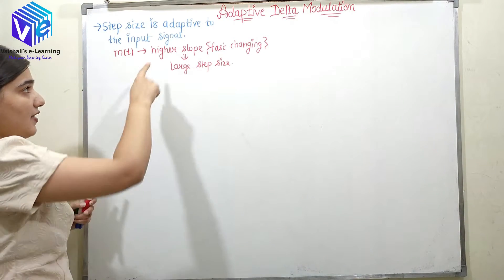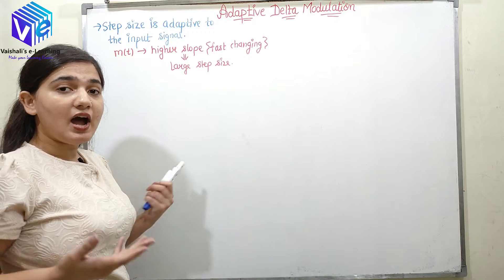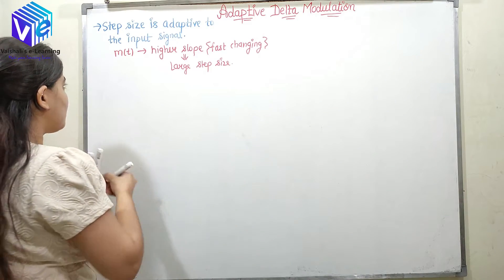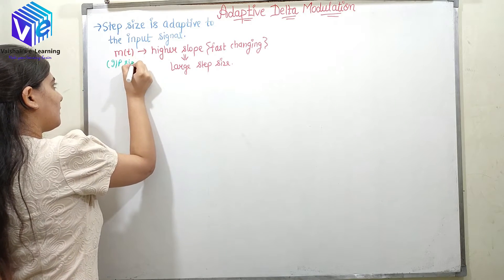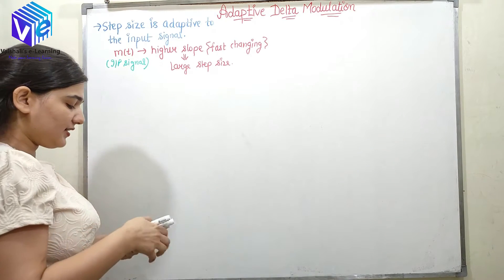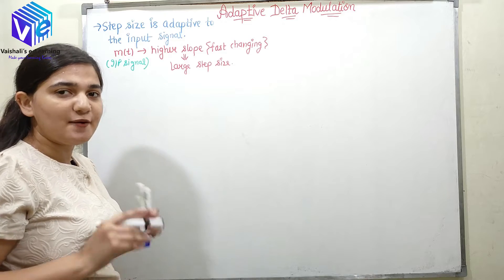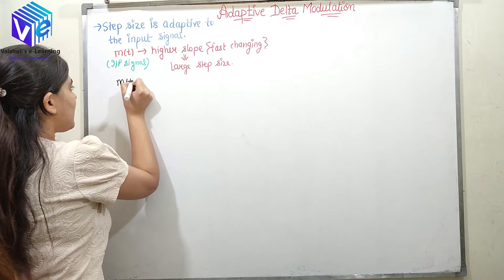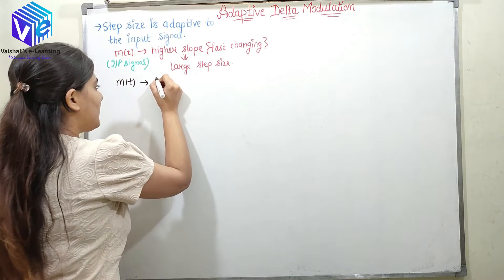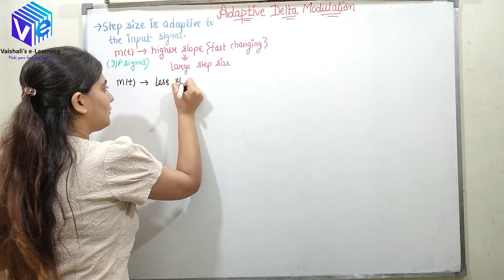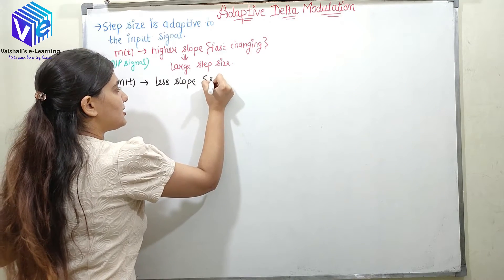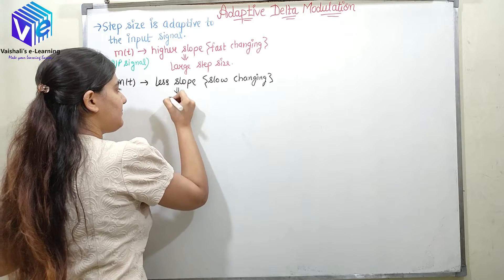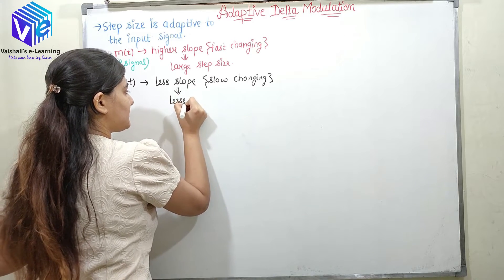When I have the higher slope or a fast changing message signal, this is my input signal. In the next case, I am taking the input signal to be having less slope, or it is slow changing. We have that time a lesser step size.